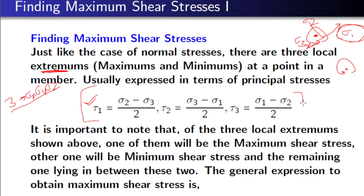The formula for maximum shear stresses is expressed in terms of principal stresses. Once you know sigma 1, sigma 2, sigma 3, you can find three shear stresses tau 1, tau 2, tau 3 — these are local extremums. Among these three, one is maximum, one is minimum, and one is in between. Which one is maximum cannot be determined in advance — only by substituting numerical values will you know which one is maximum.